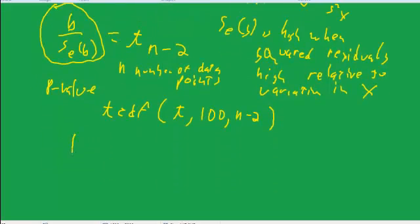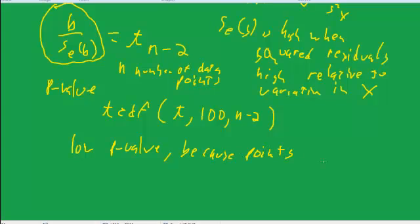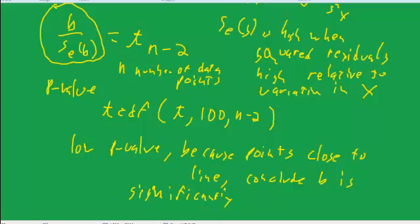When we get a low p-value, that will be because the points are close to the line, and we conclude that b is significantly different from zero.